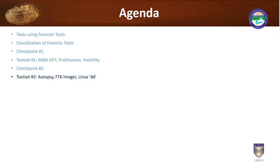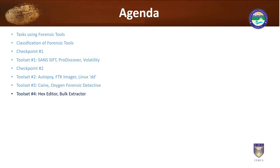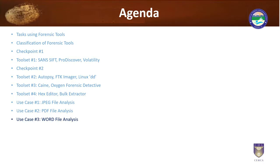The second tool set is Autopsy, FTK Imager, and Linux DD — these are commands. The third tool set comprises CAINE and Oxygen Forensic Detective. Tool set four includes a hex editor and bulk extractor. I have also added four use cases: analysis of a JPEG file, analysis of a PDF file, analyzing a Word document, and grabbing passwords from memory using these forensic tools.